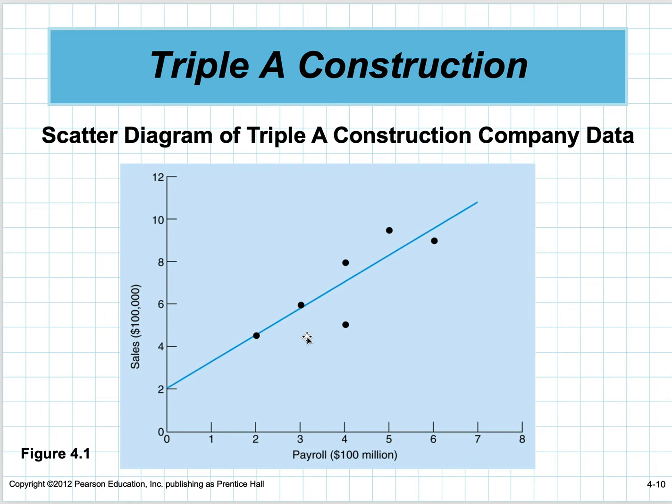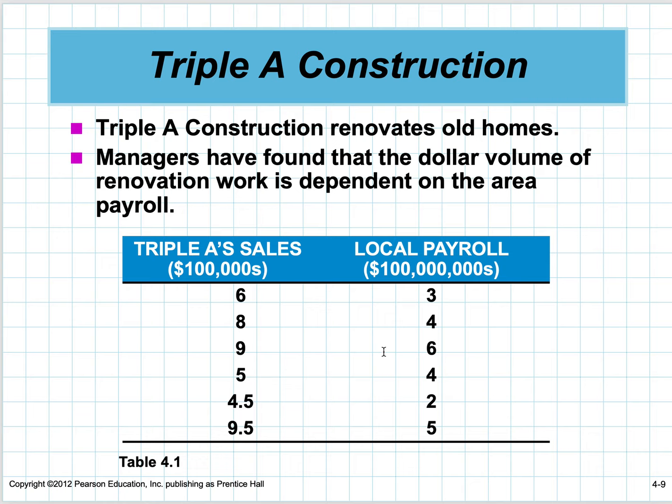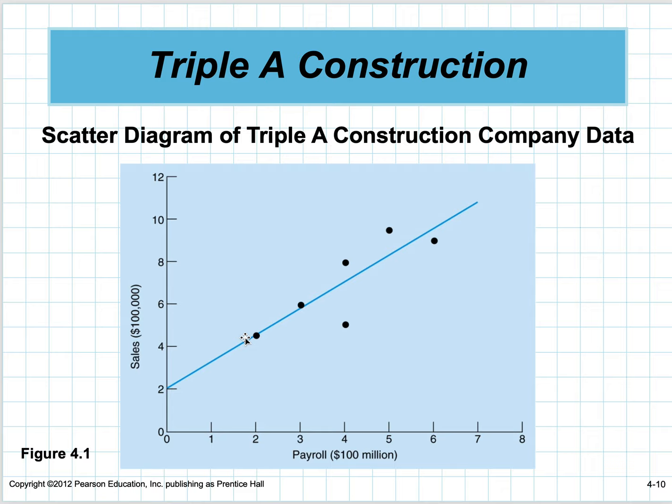In the old days, we actually used to use very good graph paper, take this data—x on one axis, y on the other—plot it, and then we would actually eyeball a best-fit line, use a straight edge, and draw the line.